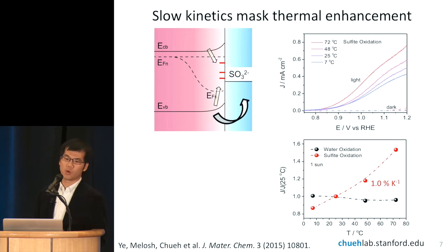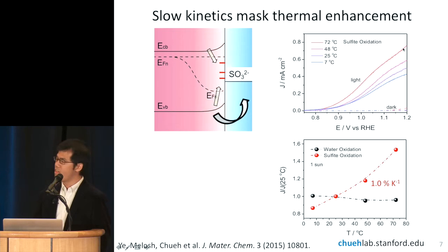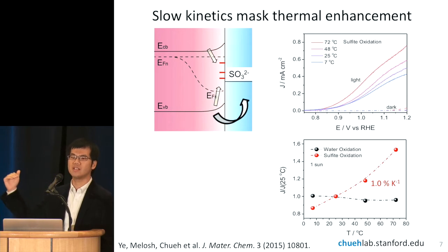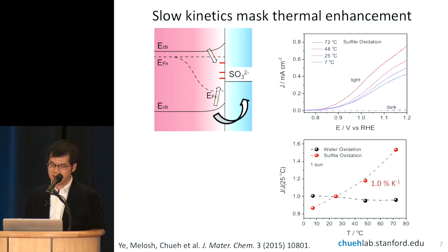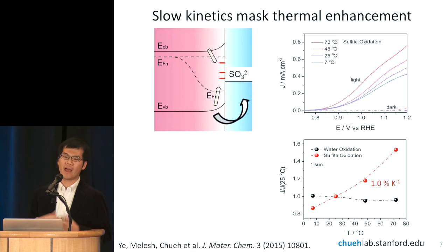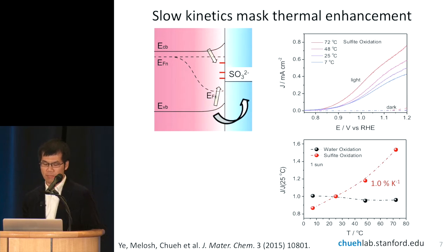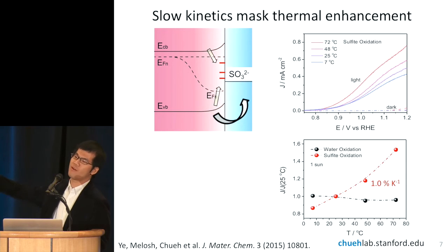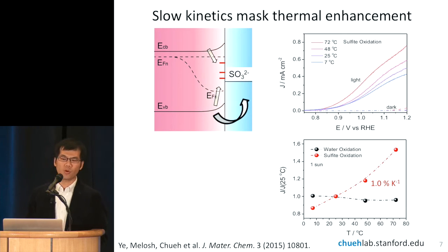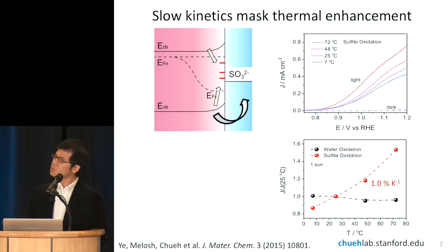The results were very encouraging. Once we replaced the water oxidation reaction with the sulfite oxidation reaction, the current began to increase with temperature. The blue line is at 7°C and the red line at 72°C — the current is slowly climbing. Without the sulfite fast redox couple, you have a very flat line, but with sulfite the curve goes up quite a bit. The coefficient we're getting is about 1% per Kelvin — so every degree you turn up, the photocurrent increases by 1%. This was good, but we were predicting something closer to 5%.